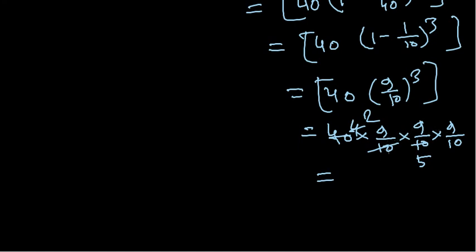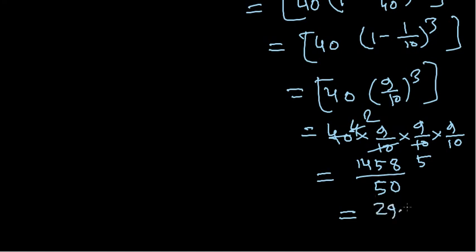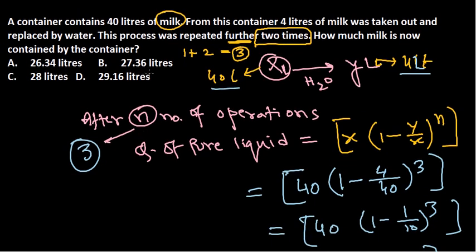Let me open the calculator and do it. 9 into 9 into 9 into 2 gives 1458 in the top, divided by 50 — since 10 × 10 × 10 divided by 40 gives 50 in the denominator. So 1458 divided by 50 gives us 29.16 liters. That's the answer — 29.16 liters, which matches option D. Once you know the formula, it's very easy: x multiplied by (1 minus y by x) to the power n.